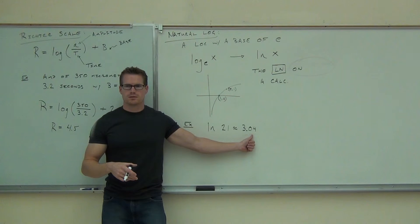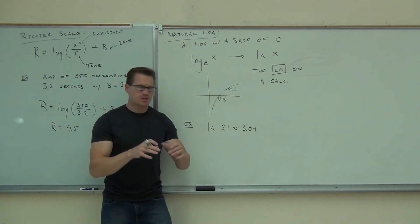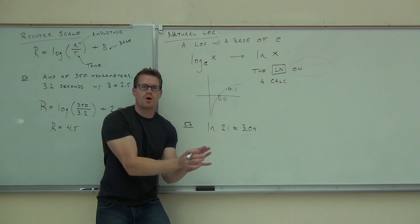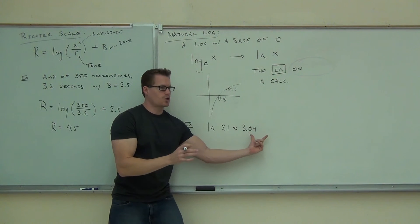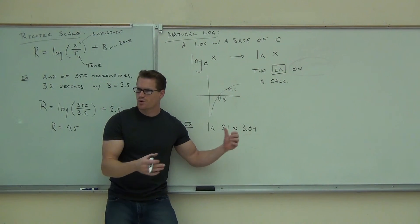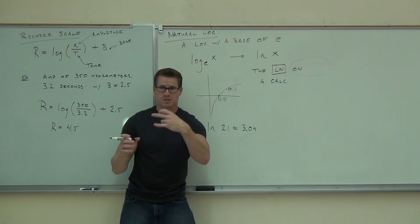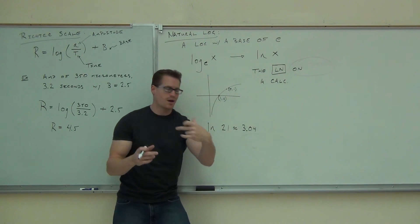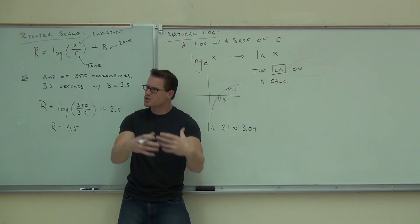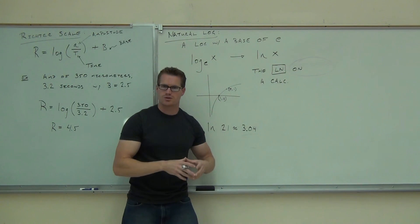Because the log is base 10. So a log is base 10, yes? This is only base E, 2.72. So since 2.72 is a smaller number, you've got to raise it to a larger exponent to get the same exact things. Does that make sense to you? So your LNs will be larger than your logs for the same value. Again, logs were 10 to what power gives you 21. This is about 2.72 to what power will give you 21. So it's going to be a smaller number. I'm sorry, that's going to be a larger number to get the same exact value for our natural logs.